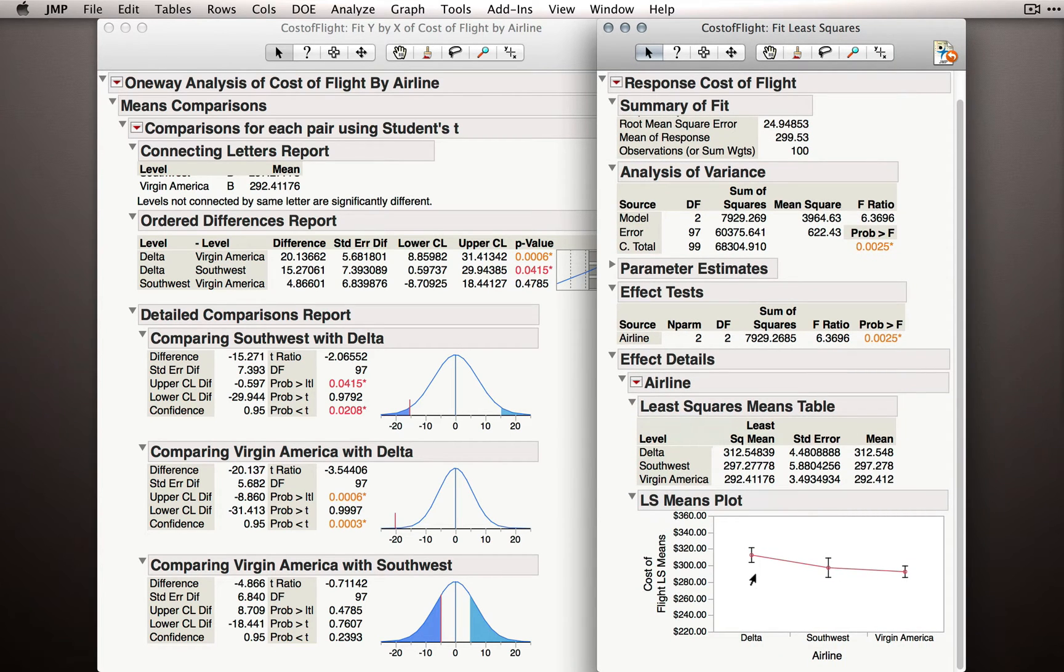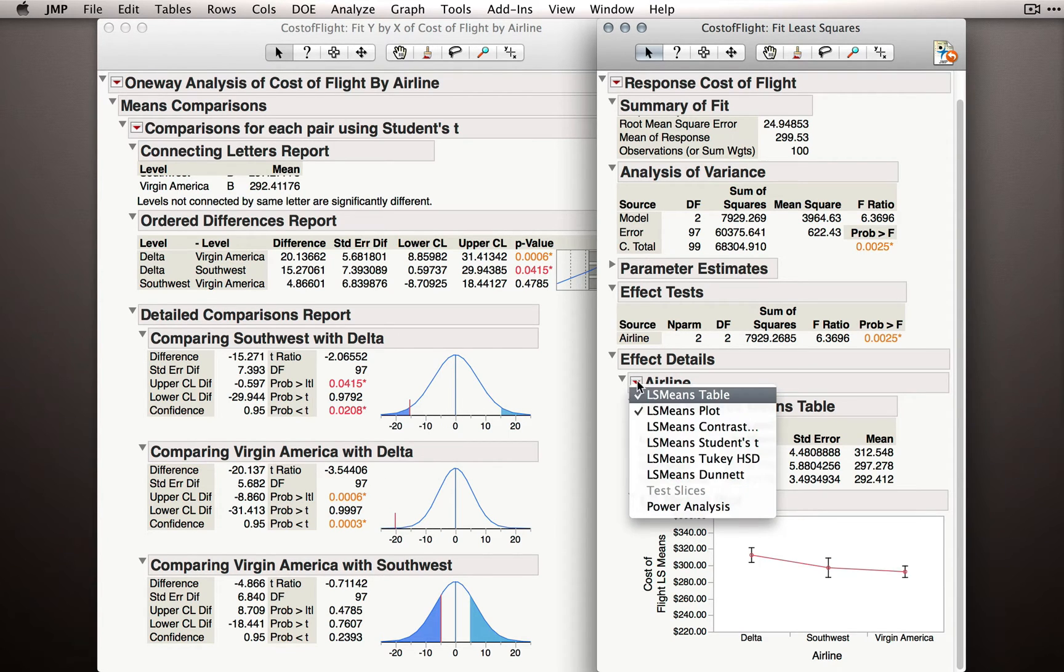This gives us the plot of the means, including 95% confidence intervals. To produce tests among these means, that is, the same tests we produced on the left using Fit Y by X, we'll go to the red triangle and again select Least Squares Means Student's t.